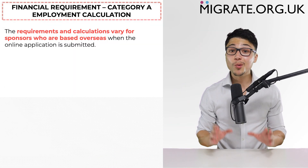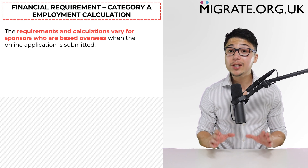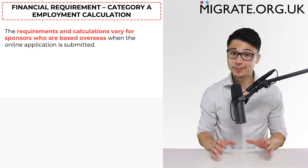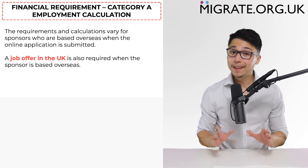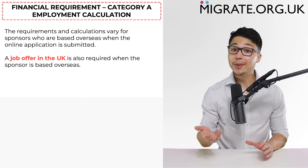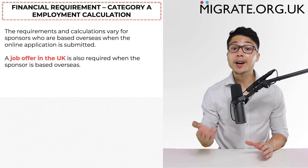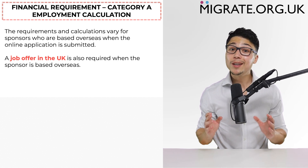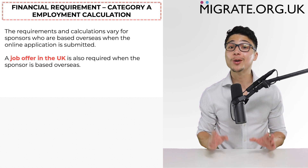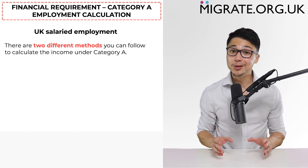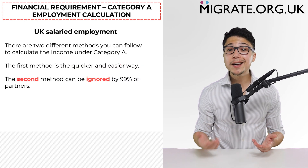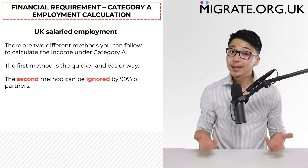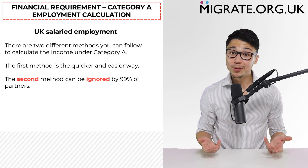Before discussing the calculation of both salaried and non-salaried employment under category A, it is important to note that requirements and calculations slightly differ if the employed sponsor is based overseas when the online application is submitted. Importantly, sponsors who are based overseas will also need to provide a job offer in the UK, and that job offer must also satisfy the financial requirement, either alone or combined with another source of permitted income. The following will relate to where the employed sponsor is based inside the UK. I'll now discuss two different methods to calculate the gross annual income for salaried employment under category A.